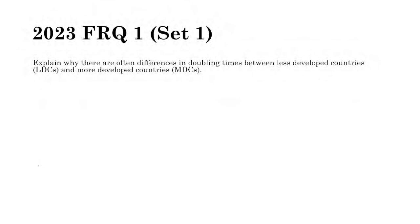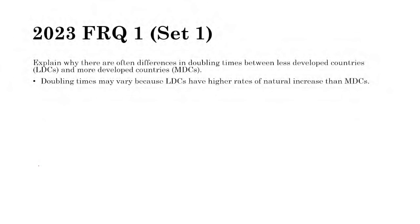A 2023 FRQ asks: explain why there are often differences in doubling times between less developed countries (LDCs) and more developed countries (MDCs). A simple, acceptable answer is: doubling times may vary because LDCs have higher rates of natural increase than MDCs. The doubling times are lower in LDCs because they have higher natural increase rates.